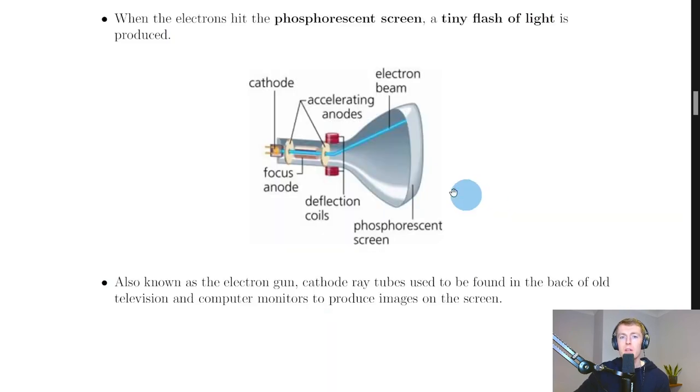When the cathode is heated, electrons are produced which are then accelerated between the two anodes. That's due to the potential difference applied between the plates and therefore the electric field that is set up.